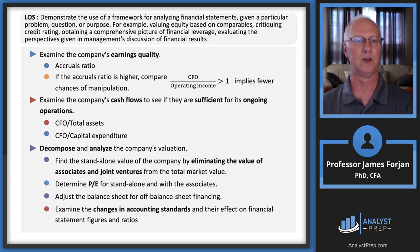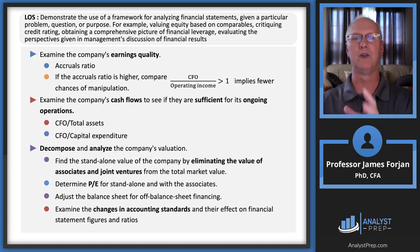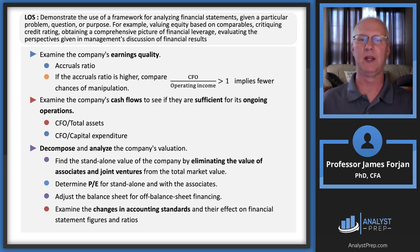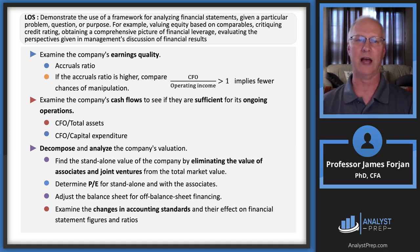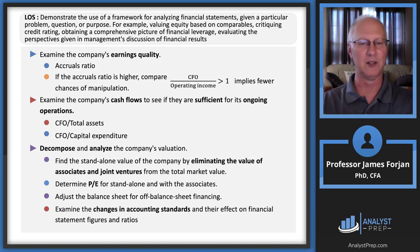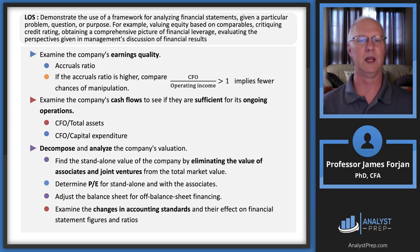We'll look at some ratios: cash flow from operations over total assets, and cash flow from operations over capital expenditures. If we have a hundred in cash flow from operations but a billion in total assets, that's pretty low. If cash flow from operations is a hundred and capital expenditures are in the hundreds of thousands, that's low as well, implying those assets are not performing well. And if we have planned capital expenditures, we must be going to the debt market, which means we need to focus on default risk and interest rate risk.